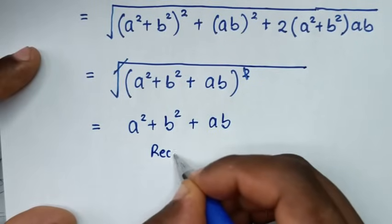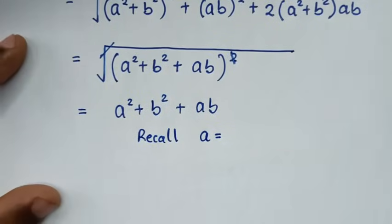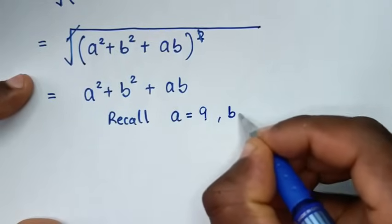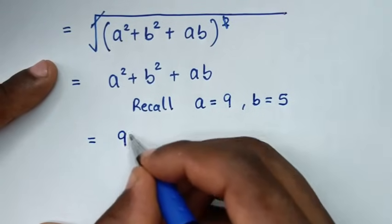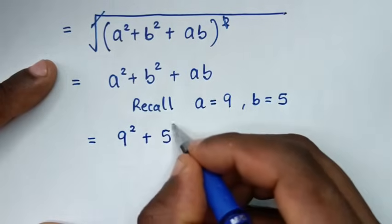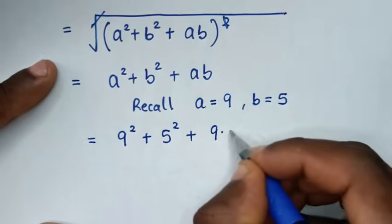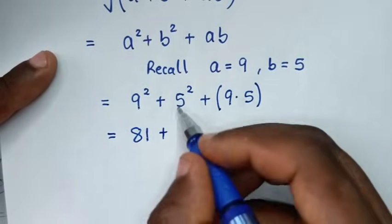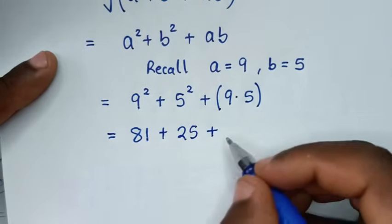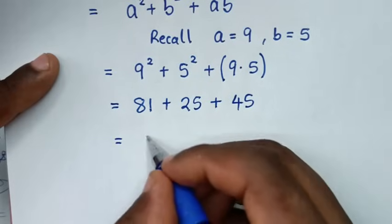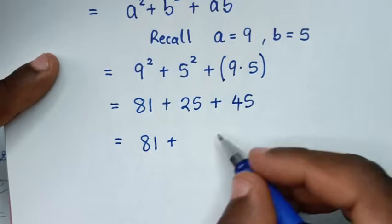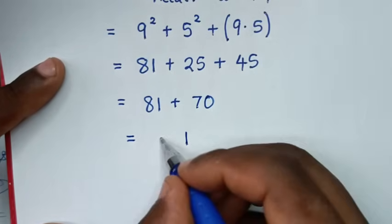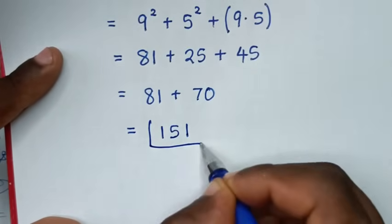Now we recall that we let a = 9 and b = 5. So it will be equal to 9² + 5² + 9×5, which is 81 + 25 + 45. Then 81 + 25 = 106, wait — 81 + 25 + 45 = 151. So 151 is our final answer.